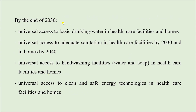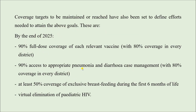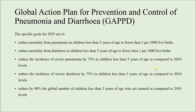By 2030, the targets include: universal access to basic drinking water in healthcare facilities and homes; universal access to adequate sanitation in healthcare facilities by 2030 and in homes by 2040; universal access to handwashing facilities with water and soap in healthcare facilities and homes; and universal access to clean and safe energy technologies in healthcare facilities and homes. These targets address basic needs such as drinking water and sanitation in healthcare facilities like sub-centers, primary health centers, and hospitals, as well as in homes.